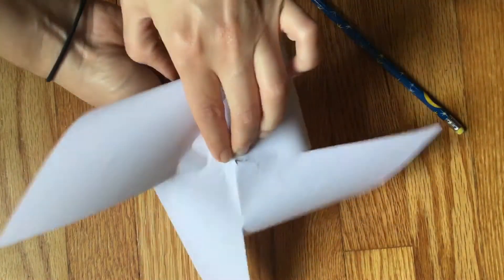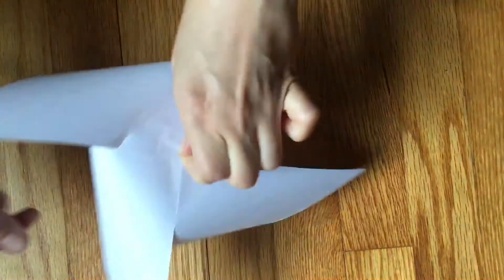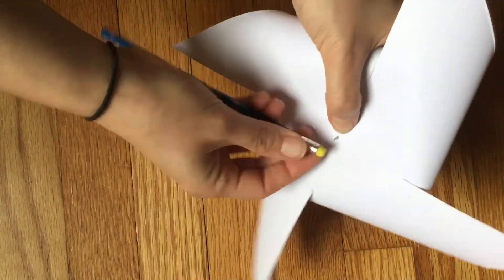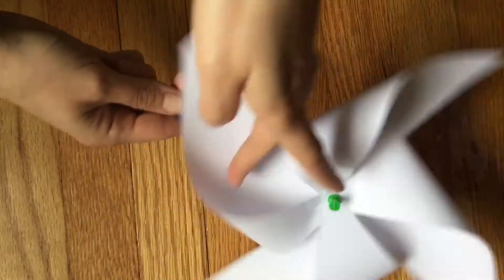You might want to get a grown-up's help with this because the pin needs to be sharp to get through the paper. And then you stick it into the eraser of your pencil and your pinwheel spins.